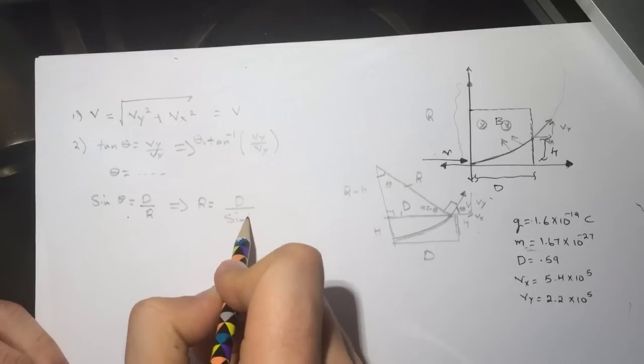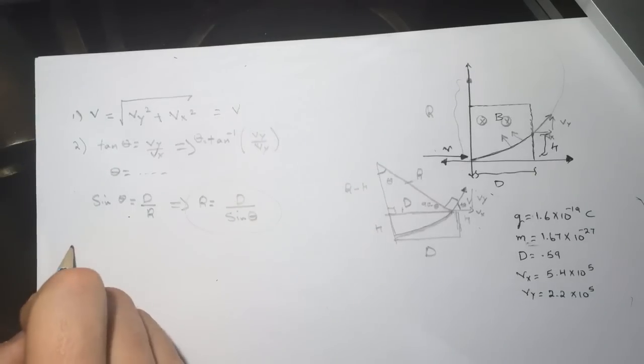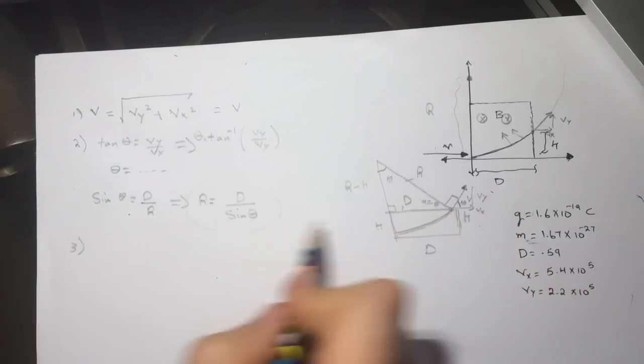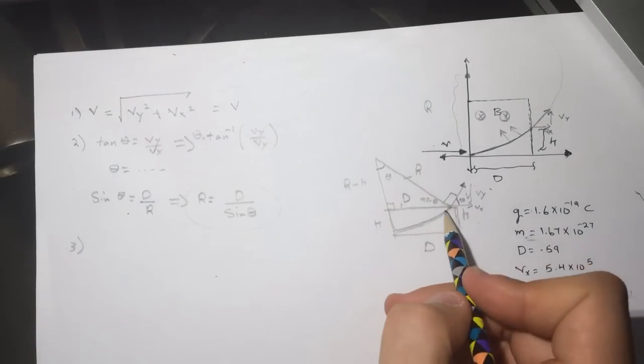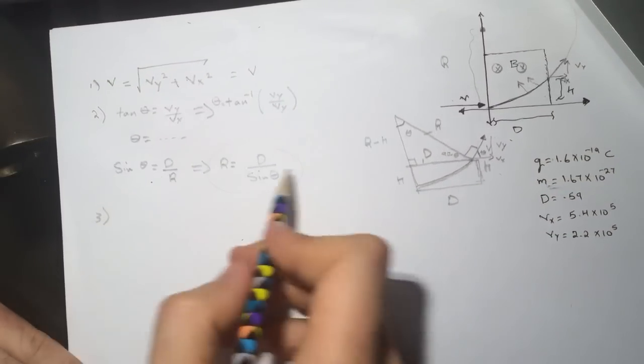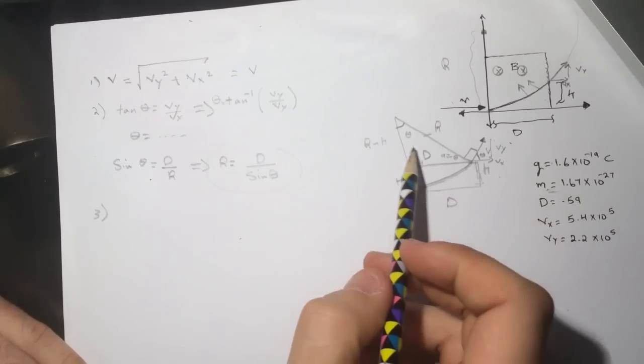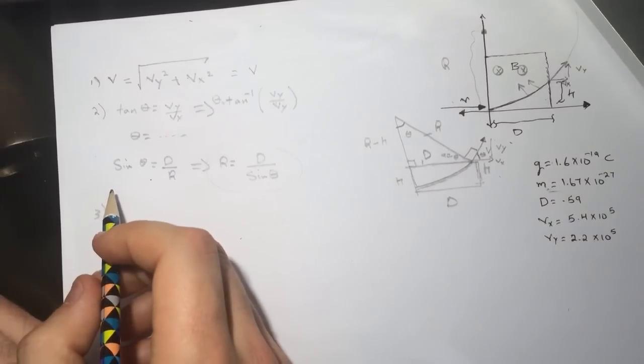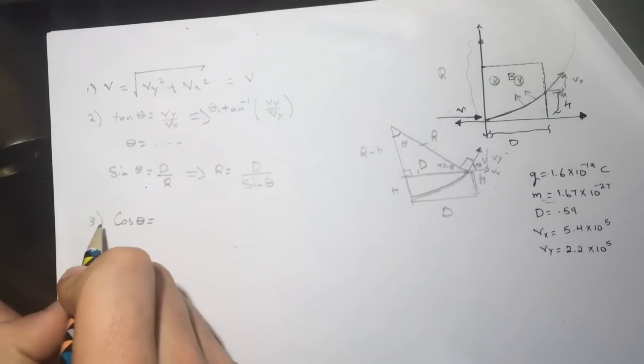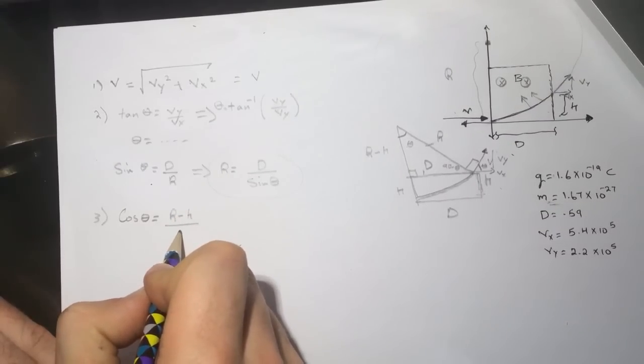Number three is asking what is the H, what is this height, the y component where the proton leaves the magnetic field. Okay, so going back to this, since we got the R or the D, we can use either the tangent or we can use the cosine. So let's use the cosine, so cosine of theta will be equal to R minus H divided by R.